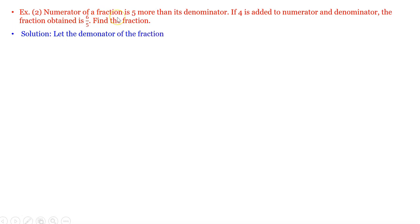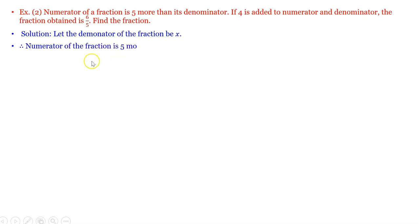Next example. The numerator of a fraction is 5 more than its denominator. If 4 is added to both the numerator and the denominator, the fraction obtained is 6 by 5. Let the denominator of the fraction be x. Therefore the numerator is 5 more than its denominator, which means x plus 5. So the fraction is (x plus 5) upon x.